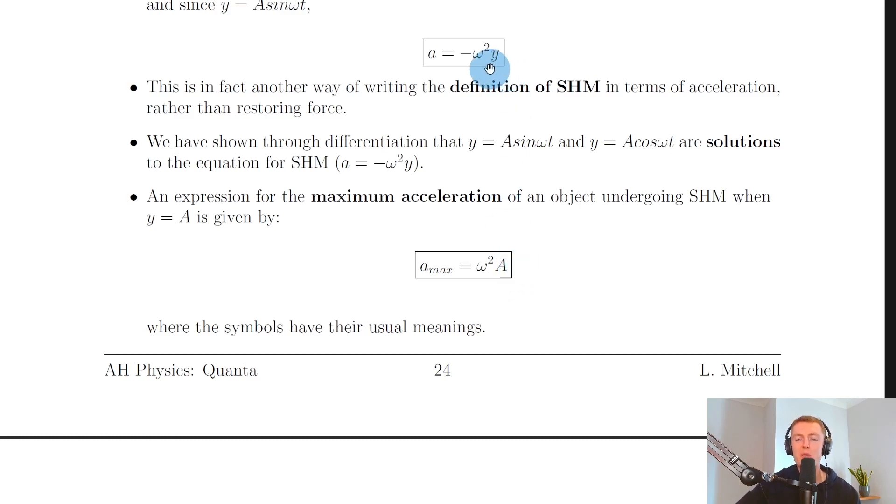And that's because at y equals zero at the equilibrium position, the acceleration will be zero or the unbalanced force or restoring force will be zero. But then at the point of maximum displacement from the equilibrium position, we'll have the maximum amplitude a and therefore the acceleration or the unbalanced force and restoring force will be maximum.